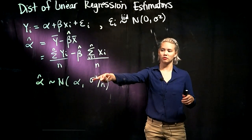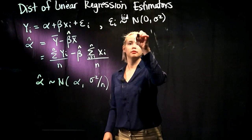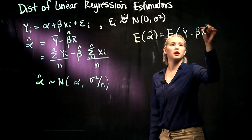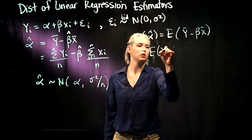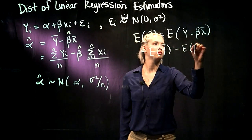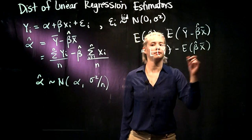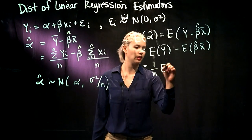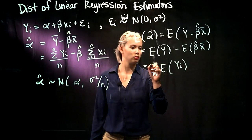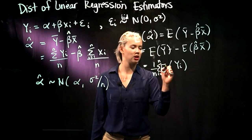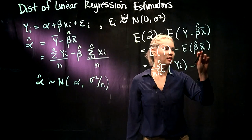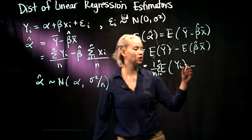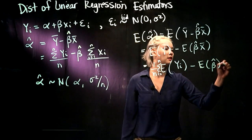Let's start by looking at the mean of alpha_hat. Alpha_hat is y_bar minus beta times x_bar. We use the linearity of expectation. Now we need to write out what y_bar is — again using linearity of expectation, we get the sum of all those expectations divided by n. And then here we have the expectation of beta_hat minus x_bar. Remember, the x's are constants, so we can pull x_bar out of the expectation, giving us expectation of beta_hat times x_bar.